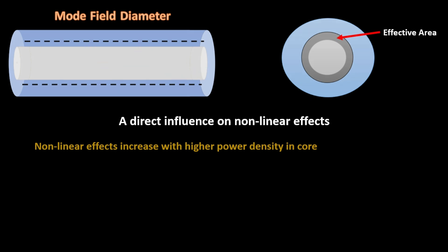The higher the power density, the higher the incidence of non-linear effects. The effective area of a fiber determines the power density of the light for a given power level.